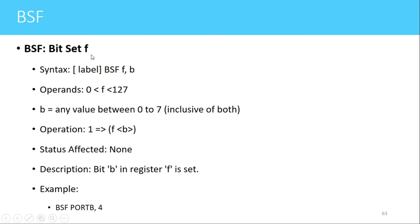The next instruction is BSF, which stands for Bit Set File. The syntax is BSF F comma B. Again, F is the file register, which can take any address between 0 to 127 of RAM memory locations or it can be any SFR, and B is the bit position in that particular register.